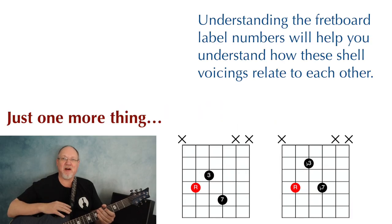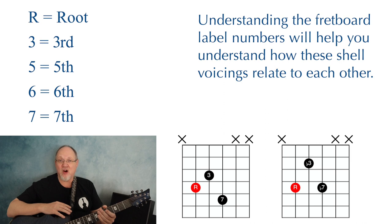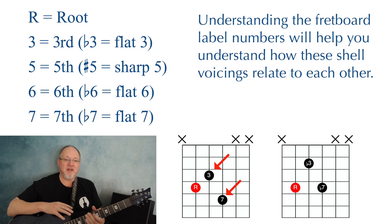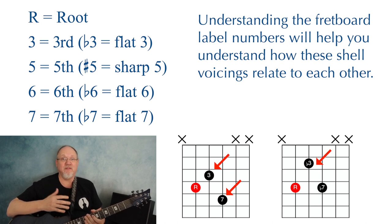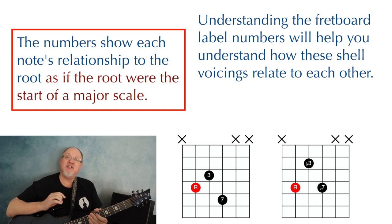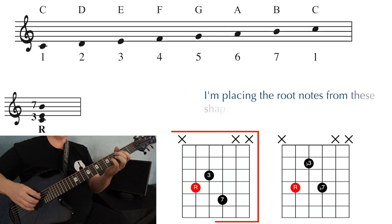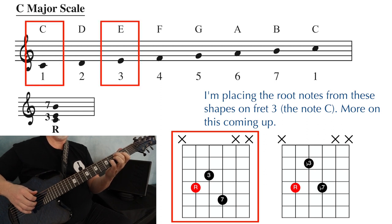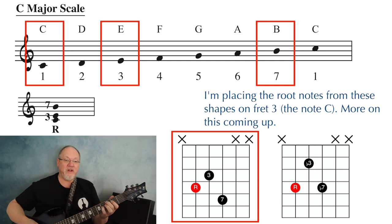Each chord is going to be labeled with an R for root, three for third, and seven for the seventh. Sometimes you'll see just a plain number like three or seven, and sometimes you'll see a flat or sharp in front of the number, like flat three or flat seven. The numbers show how each note relates to the root as if that root were the beginning of a major scale. For example, in a C major seven chord, the E and B are labeled as three and seven because they are the third and seventh notes of a C major scale.